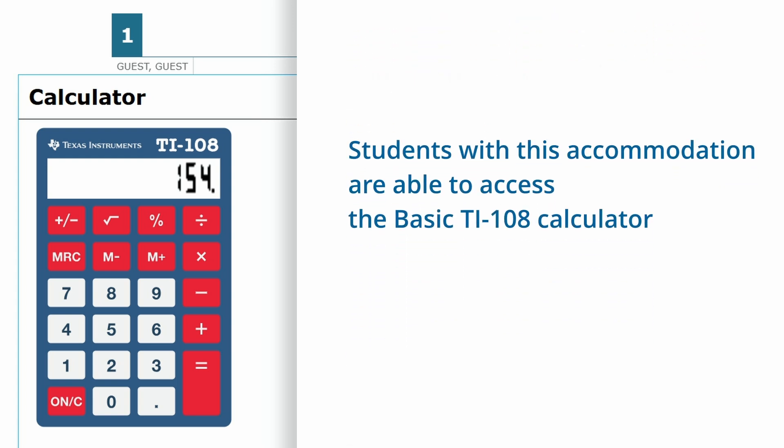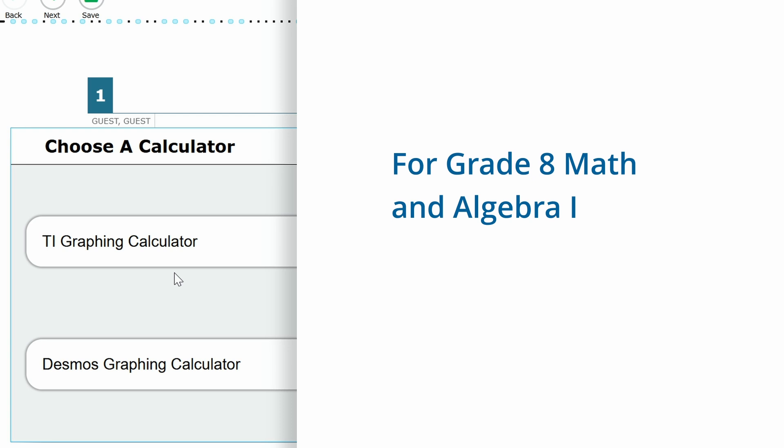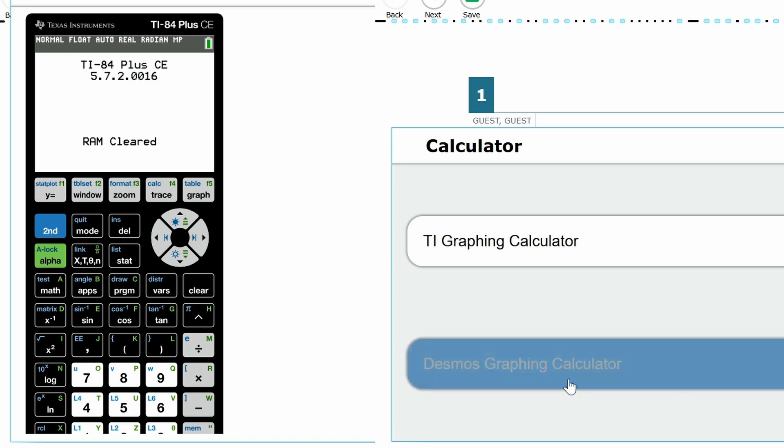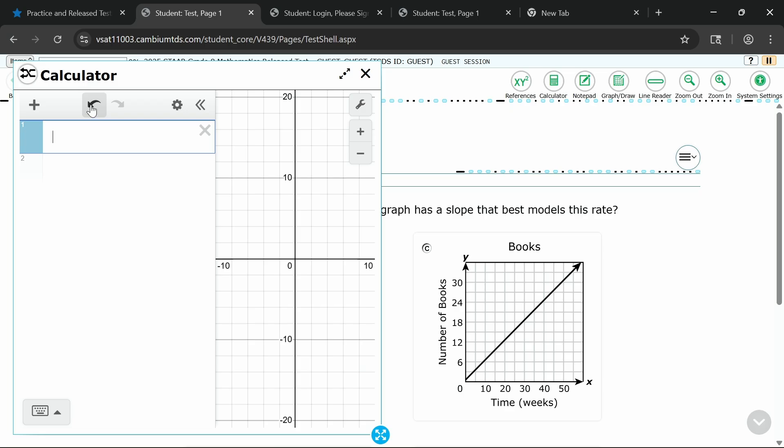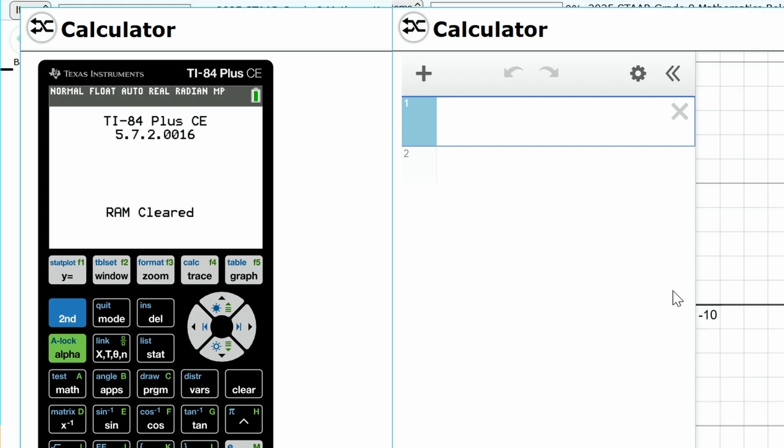Students with the accommodation are able to access the basic TI-108 calculator. For grade 8 math and Algebra 1, students have two options, the TI graphing calculator and the Desmos graphing calculator. Use the shuffle icon in the top left-hand corner of the window to switch back and forth between the two calculator options.